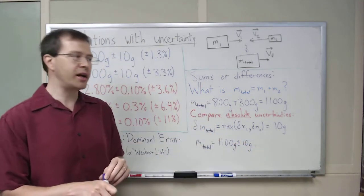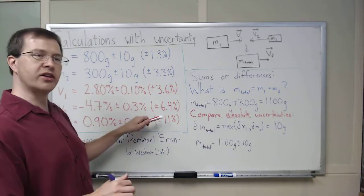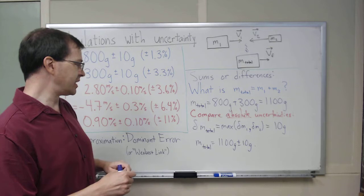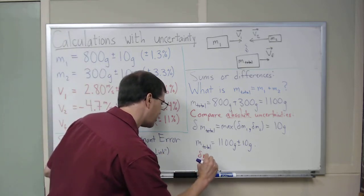If I wanted to find the relative uncertainty, the percent uncertainty, I would then say that the relative uncertainty in m total divided by m total itself would be 10 grams over the 1100 grams.